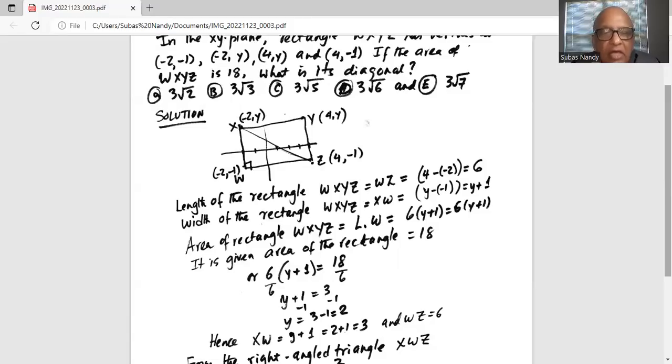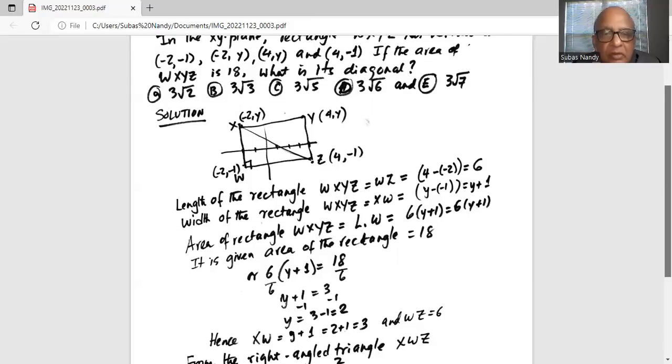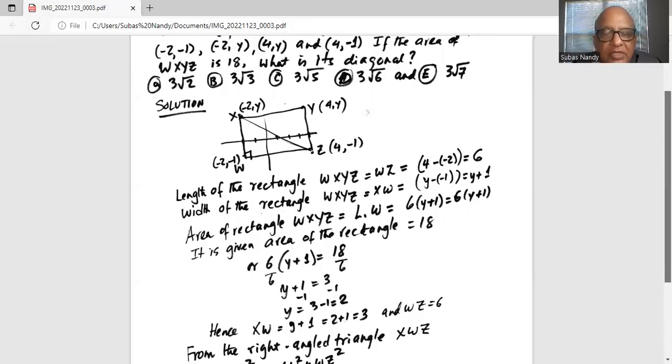Hence, XW, that distance, is 2 plus 1. Since y is 2, so 2 minus (-1), or 2 plus 1, is 3. And WZ we already know is 6.